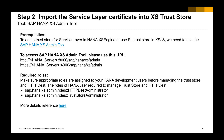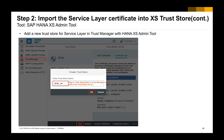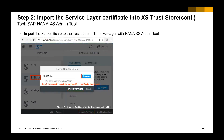You can open the XS Administration Tool using the URL provided. In the Trust Manager, you can create a new trust store, then import the Service Layer certificate we exported in the last step into this trust store.